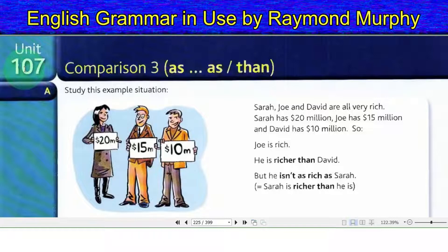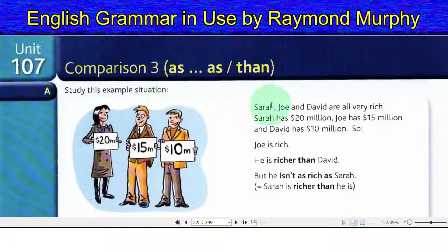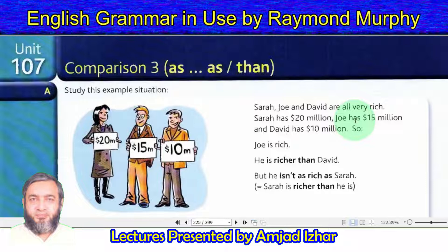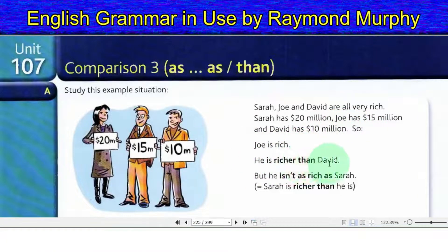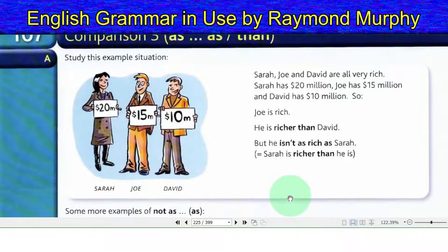Unit 107: Comparison with 'as...as'. Study this example situation: Sarah, Joe, and David are all very rich. Sarah has 20 million dollars, Joe has 15 million dollars, and David has 10 million dollars. So Joe is rich — he is richer than David, but he isn't as rich as Sarah. Sarah is richer than he is.